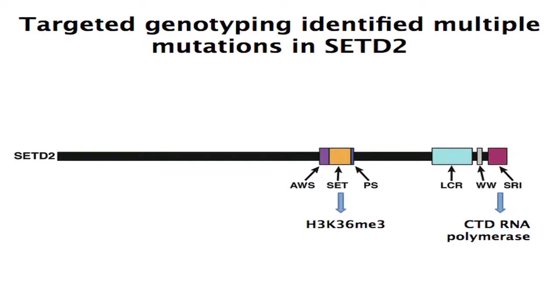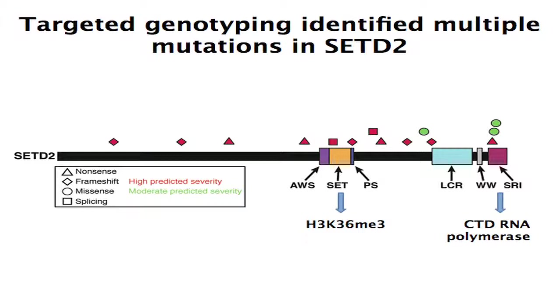We then turned to the chromatin regulatory molecules we were most interested in and focused on SETD2. SETD2 is a large protein that interacts based on its carboxyl terminal tail with the CTD of RNA polymerase and is essentially dragged along by RNA polymerase. The SET domain is the enzymatic machine that places a very specific mark — it trimethylates the lysine 36 position on histone H3. We looked at mutations in our dataset and identified a number of mutations of high and moderate severity that spanned the SETD2 molecule, which really matched what other groups had found in deep sequencing efforts.